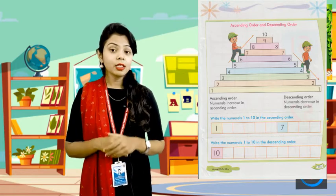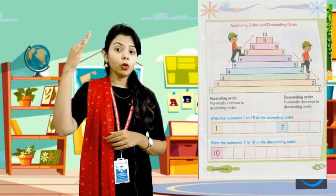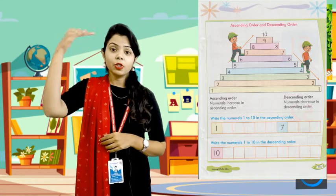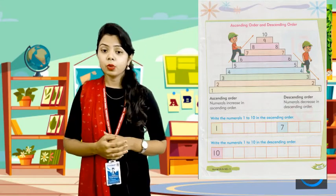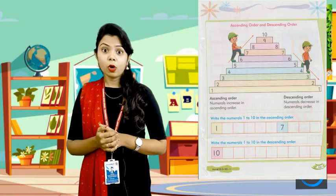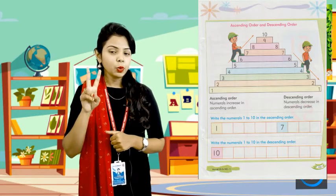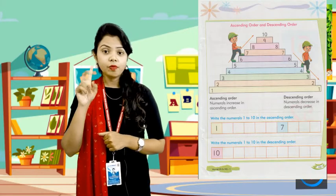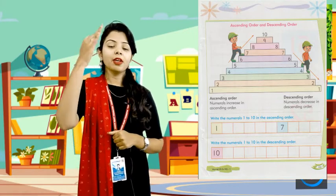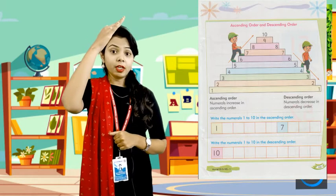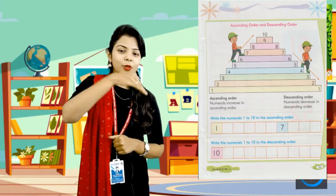So, ascending means the number is going to the top. And descending means the number is going back down. So we will see who is ascending and who is descending. The first boy is going up — ascending — and the other is descending, coming down from the top.